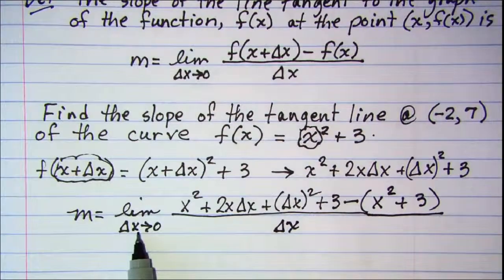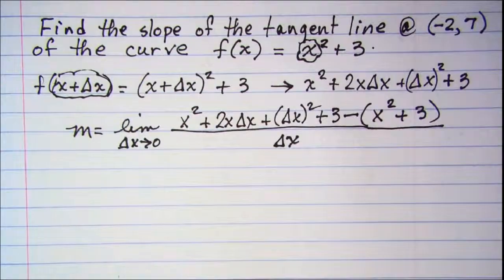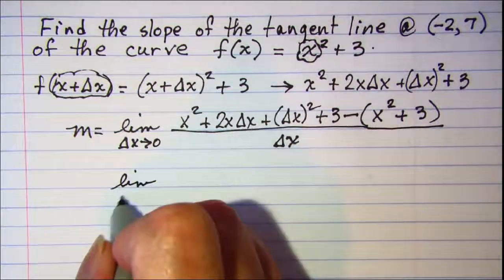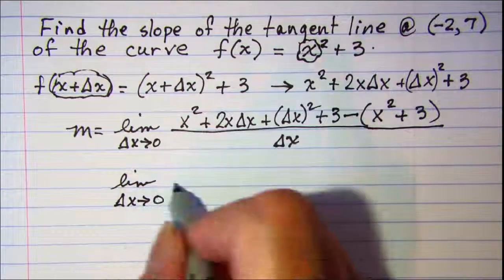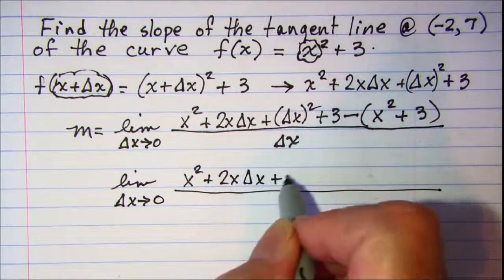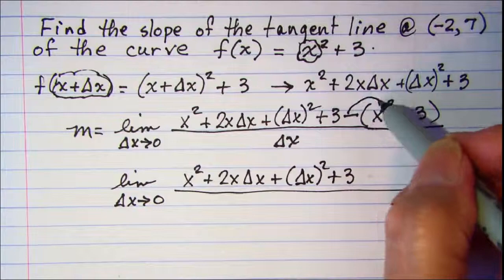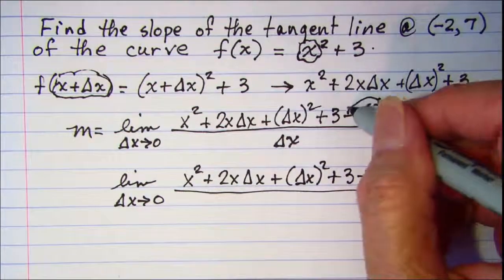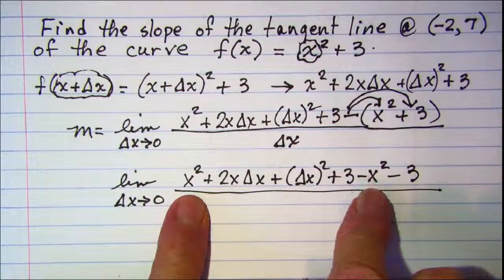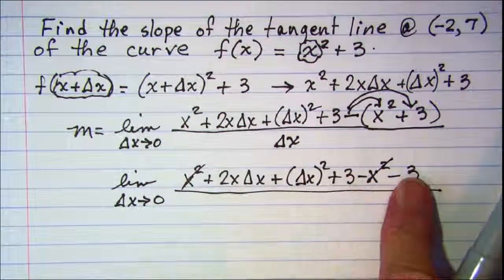Now we can't do direct substitution in here for Δx because I'll have division by zero. So I need to multiply things out and simplify and see if something cancels. So I have the limit as Δx approaches zero of, and then if I distribute I'll have a negative x² and a negative 3. And my x² in the front and this negative x² will cancel and my positive 3 and my negative 3 those will cancel.